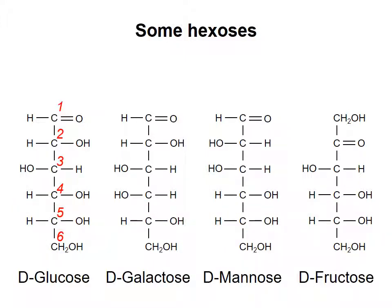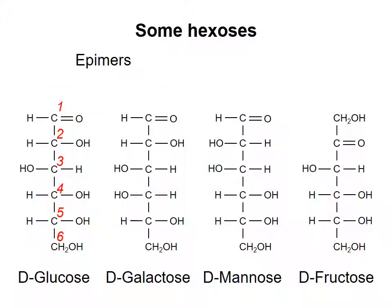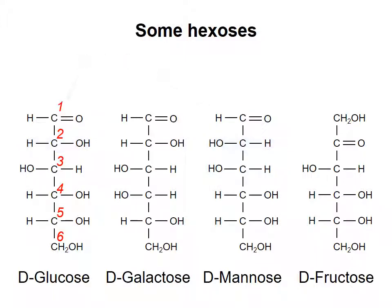If you compare glucose and galactose, you will notice that the stereochemistry around each chiral carbon is the same except around carbon 4. Monosaccharides that are isomers and differ only by the stereochemistry around one carbon are called epimers. Glucose and mannose are also epimers, differing only at carbon 2. In the next video, I will talk about how monosaccharides can cyclize to form ring structures.